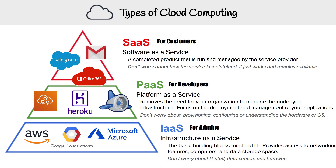The last one on our list is Infrastructure as a Service, and this is really intended for admins. When you're using AWS, GCP, or Azure, this is what infrastructure as a service is. It's the basic building blocks for cloud IT — it provides access to networking features, computers, and data storage space. You don't worry about the IT staff, the data centers, or the hardware, but you have access to all those resources to build whatever you want.